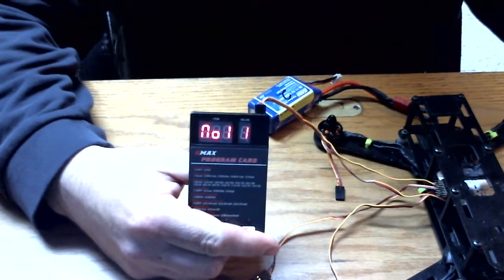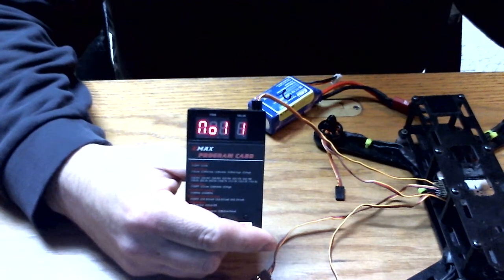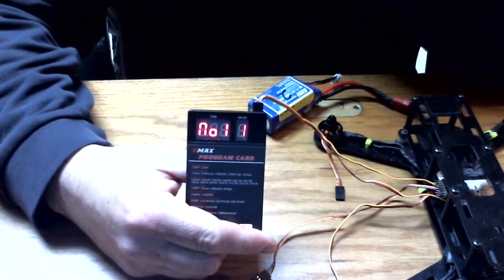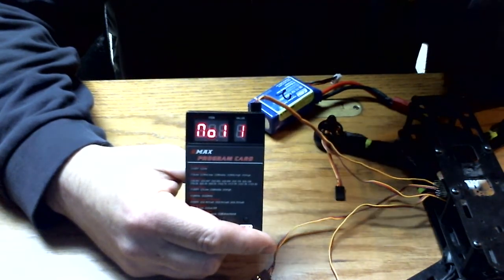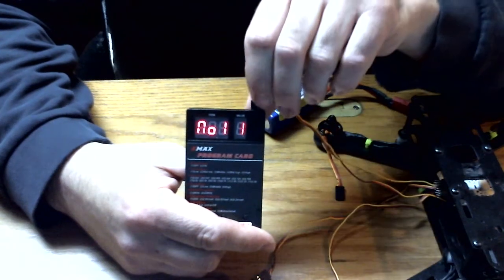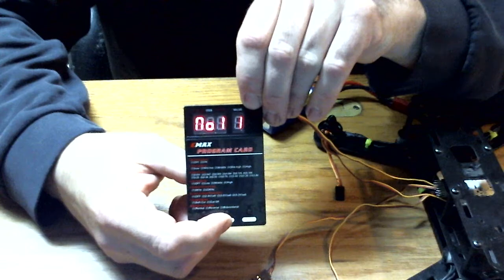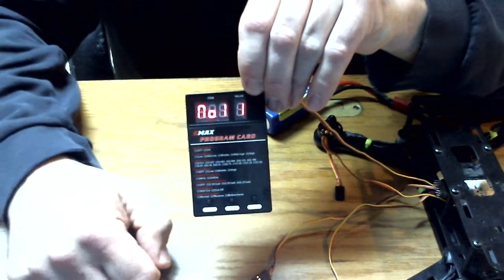Now there are eight different programmable parameters on this ESC and I'm just going to go through real quick what I have mine set at. Number one option is the brake. There are two options, on and off. If you want to change it, the middle button right there just changes the option from one to two. I have mine set on one.